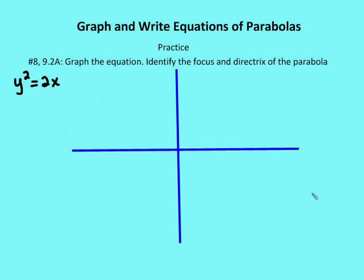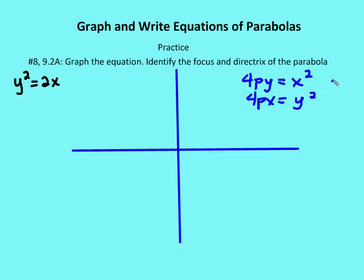In the next problem, we're asked to graph this equation and identify the focus and directrix of the parabola. We recall that our formula for the focus is going to be either 4py is equal to x squared, or 4px is equal to y squared. The first case is a parabola that opens up or down; the second case opens right or left. Here, the y value is squared, so the parabola opens right or left.